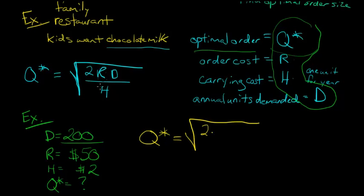So 2, and then we're going to have the R, which is 50, and then the D, which is 200, and then we're going to put that all over H, which is 2. Put that in here. And multiply this out, take this all, and then just take the square root, and we end up with Q star is going to be 100.